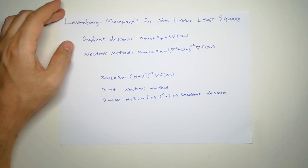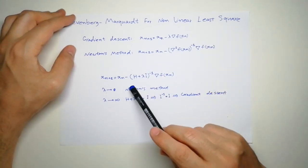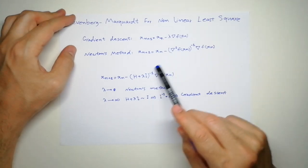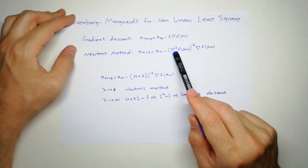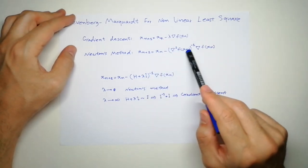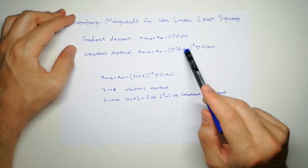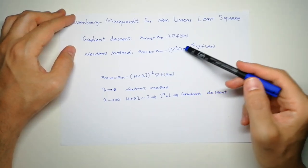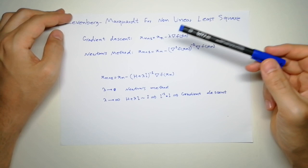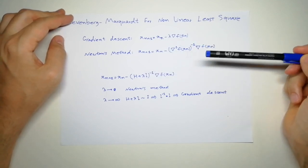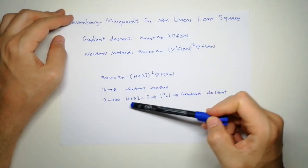So we have Levenberg. In the Levenberg algorithm, if you have a look here, we have H plus lambda I. It's less like Newton method, but here we have H plus lambda I instead of just H. This is for multi-dimensional data with H for higher order. If lambda goes to infinity...